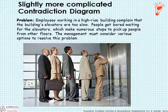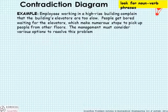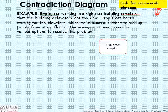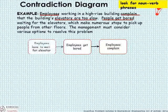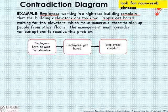Here's a more detailed example of a contradiction. The problem: employees working in a high-rise building complain that the building's elevators are too slow. People get bored waiting for elevators, which make numerous stops to pick up people from other floors. Management must consider various options to resolve the problem. Let's turn this into a diagram by looking for noun-verb phrases. First, employees are complaining — a bad thing, and the end result of the problem, so let's put that on the right side of the diagram. They're complaining because they're getting bored. They're getting bored because the elevators are too slow and they have to wait.